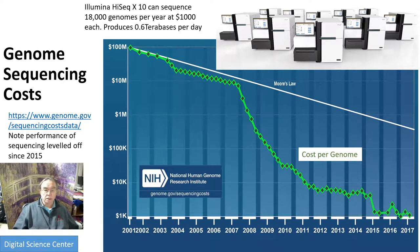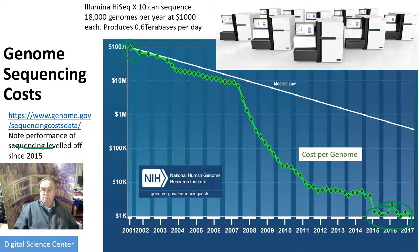Here's an example from NIH on gene sequencing cost. The first genome sequence cost 100 million dollars; nowadays they cost about $1,000. This plot shows a contrast with Moore's law — Moore's law hasn't had any revolutions, but around 2007 there was a revolution and the cost of sequencing a gene dramatically decreased. Now it's more or less leveled off at about $1,000.